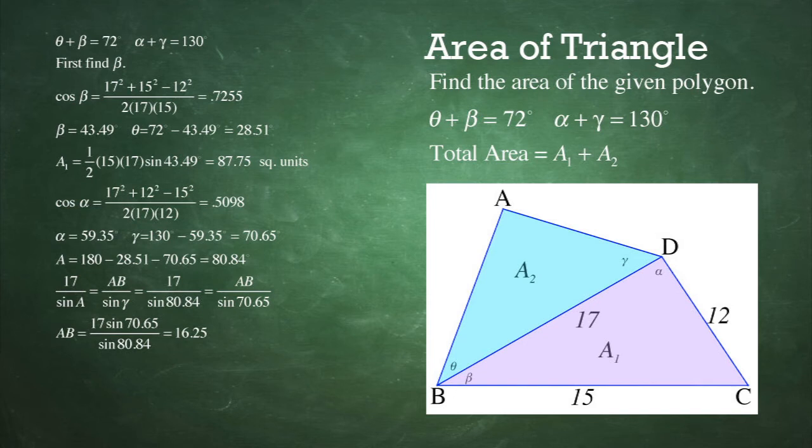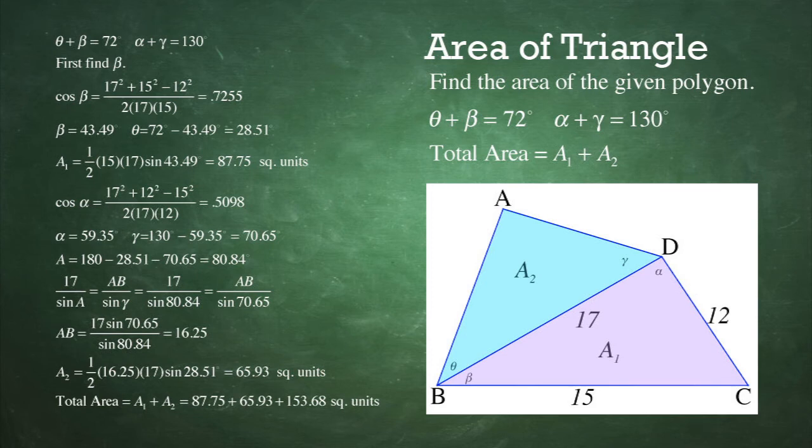And once we have found AB, now we can find the area of triangle ABD, or area A2. It is simply equal to one-half times 16.25 times 17 times the sine of the angle 28.51 equals 65.93 units. So the total area is area 1 plus area 2, which equals 153.68 units.